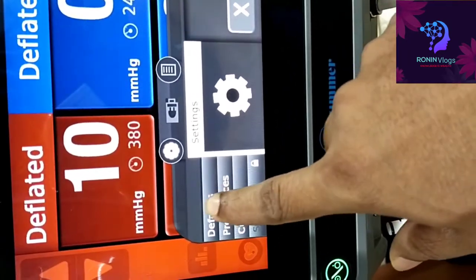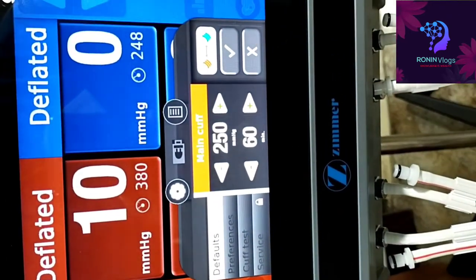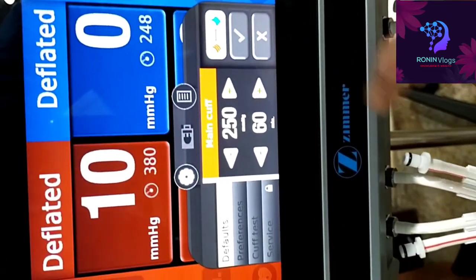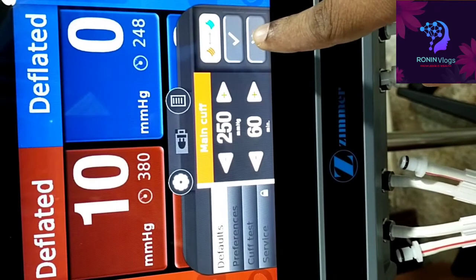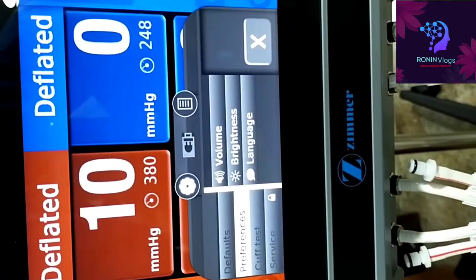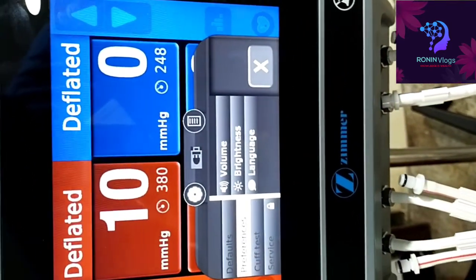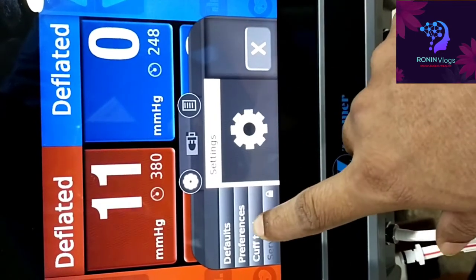This is the settings - defaults, preference, cuff test like that. Before using, we need to do the cuff test, then only if any leakage we can find out. The cuff test and settings, everything available here in this option.